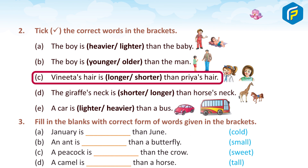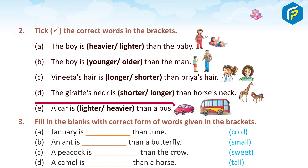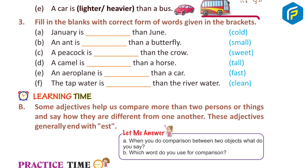C. Verita's hair is longer than Priya's hair. Answer: Longer. D. The giraffe's neck is longer than the horse's neck. Answer: Longer. E. A car is lighter than a bus. Answer: Lighter.